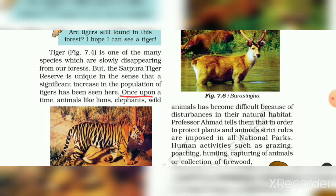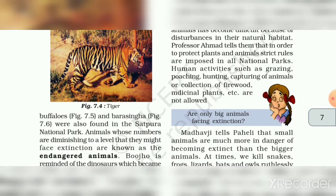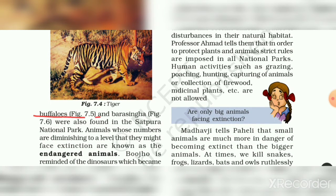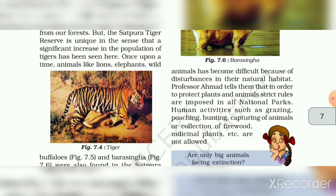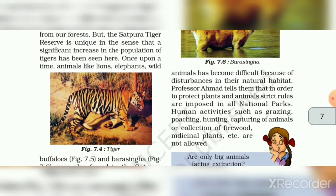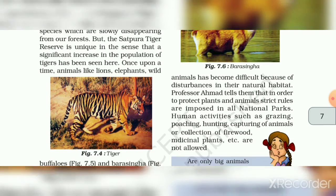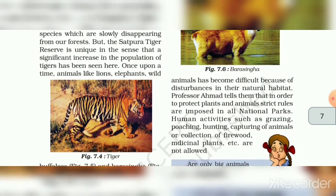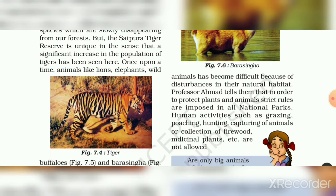Once upon a time, animals like lion, elephants, wild buffaloes (Figure 7.5), and barasingha (Figure 7.6) were also found in Satpura National Park. So in Satpura National Park, we can see lions, elephants, wild buffaloes, and barasingha. Students, look at figure number 7.4 — the tiger figure.